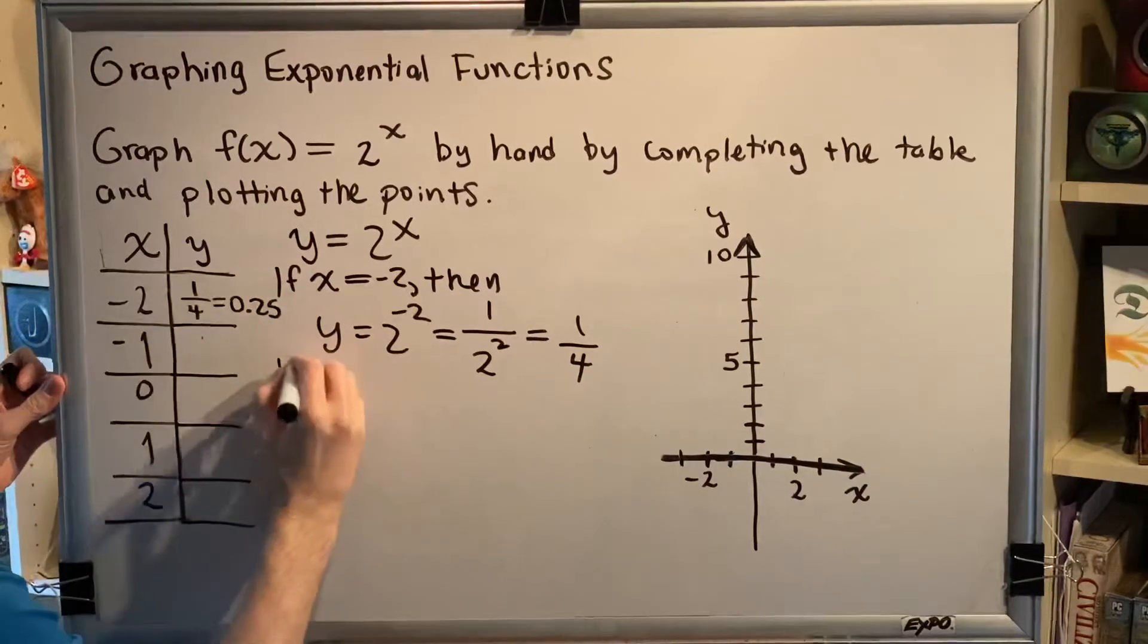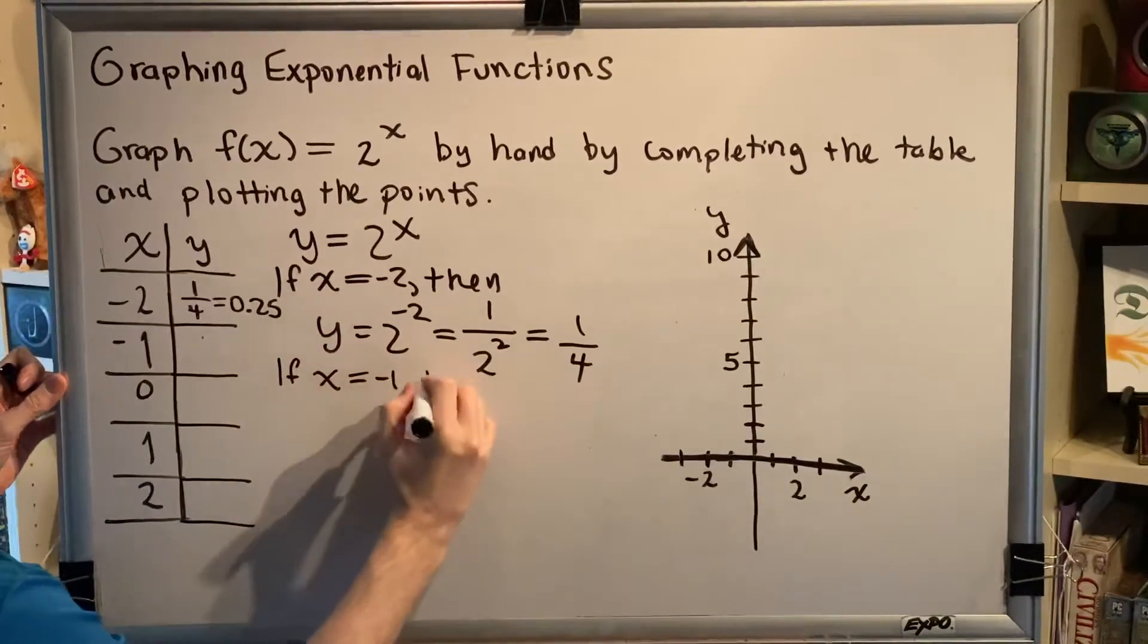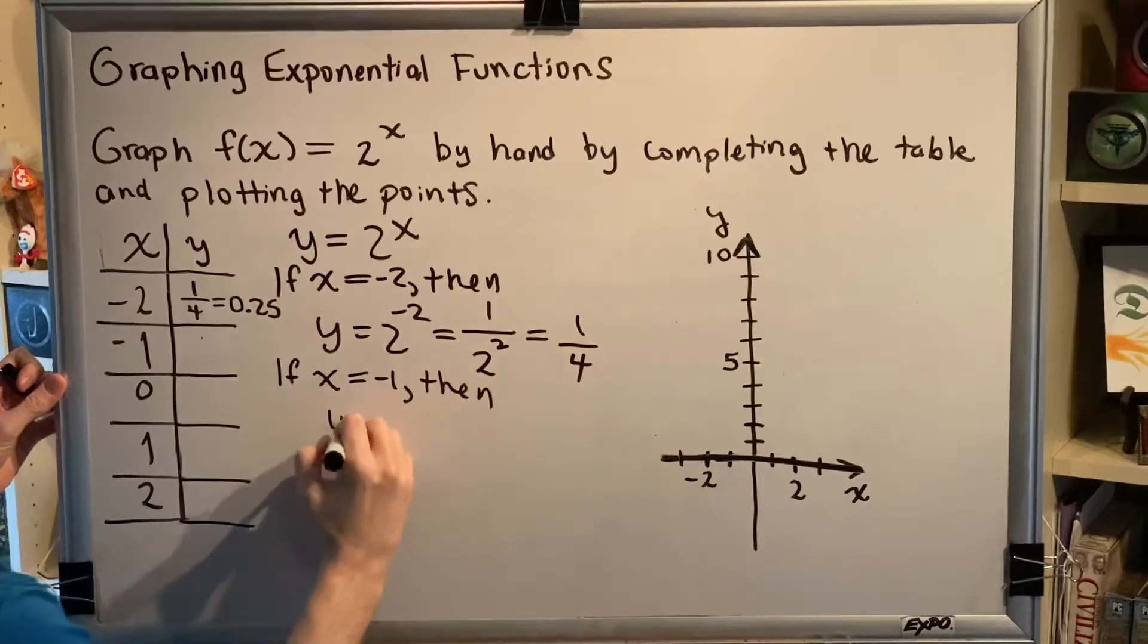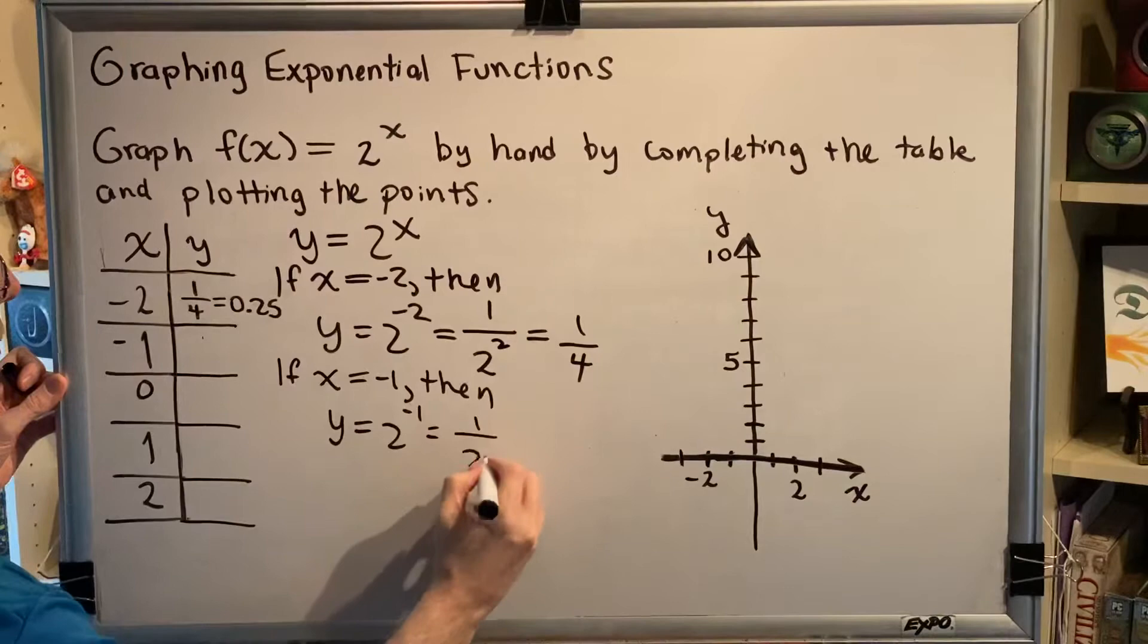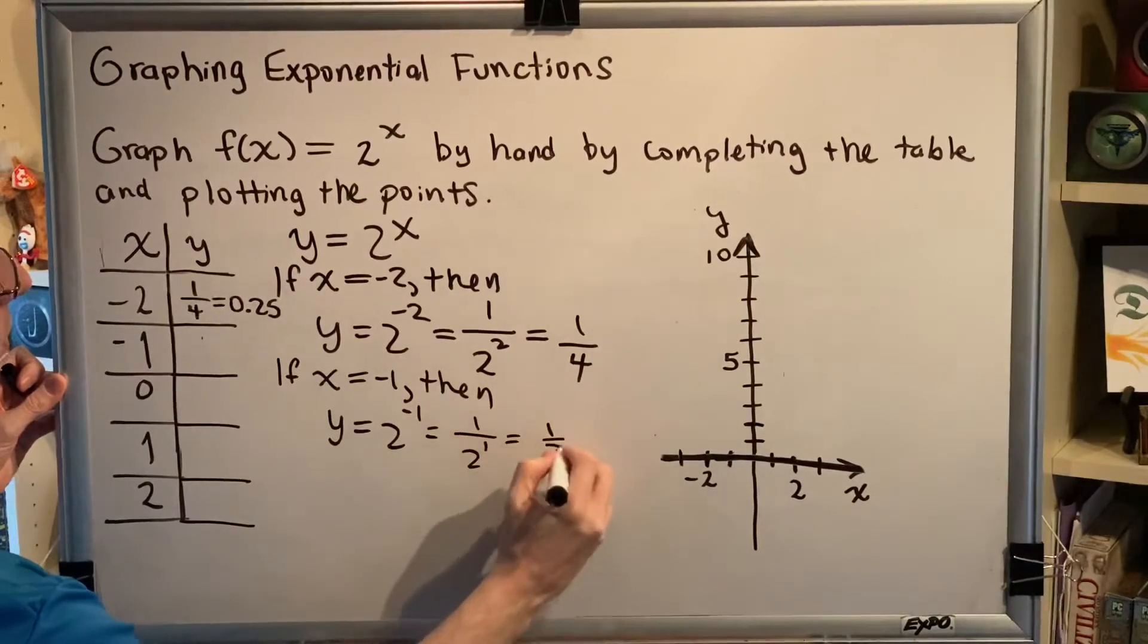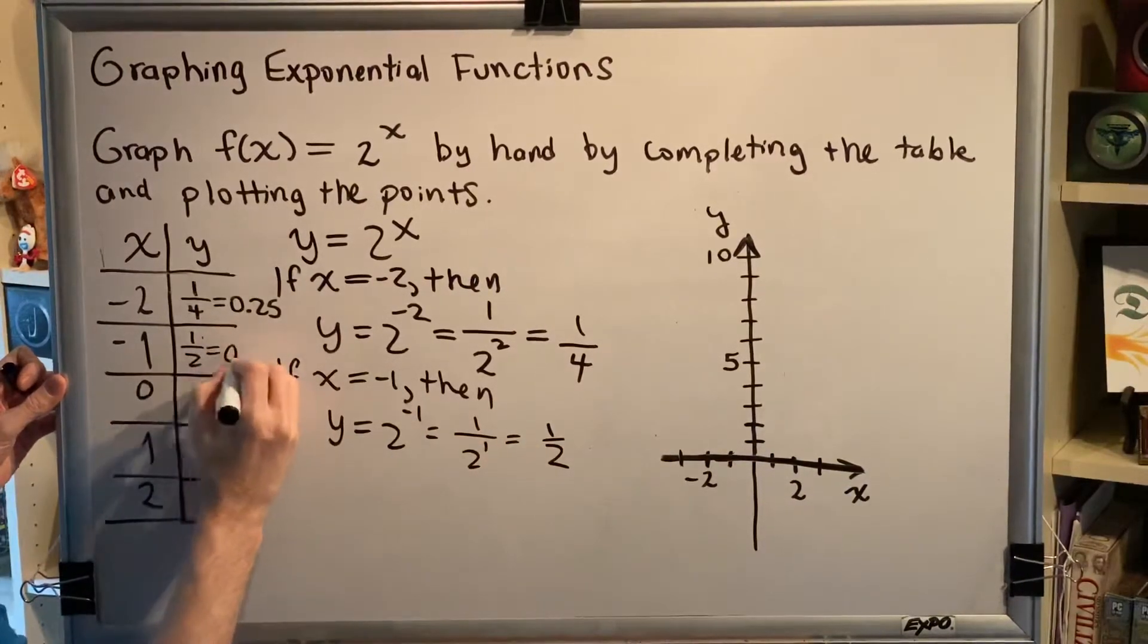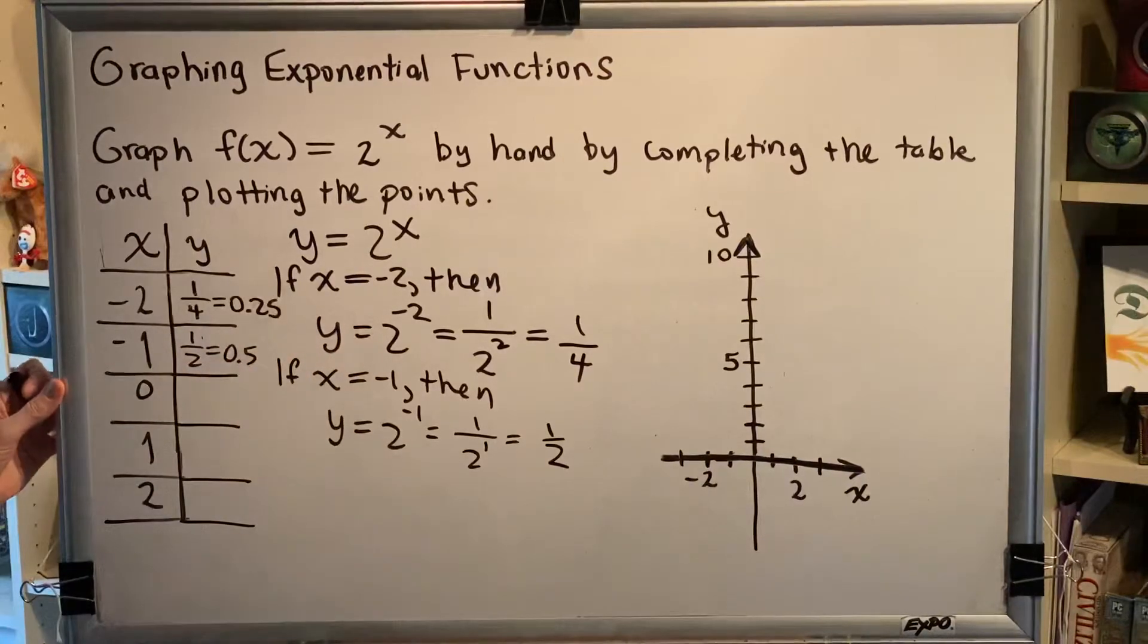Next value: if x = -1, then y = 2^(-1), which is the same as 1 over 2^1, which is 1/2, and we get 0.5 as our decimal value.